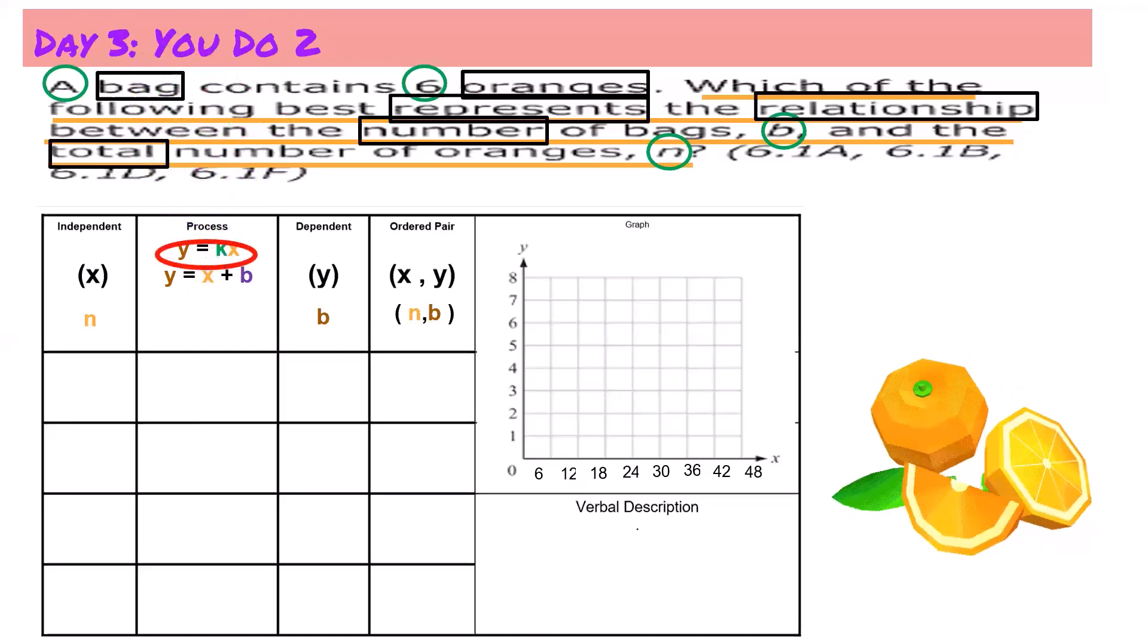Therefore, if anything goes through the origin, it is the multiplicative rule. And the first thing I would do is I will substitute the y and x variables with n and b, so now that when I write my equation I know exactly where my information needs to go.